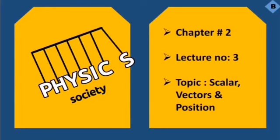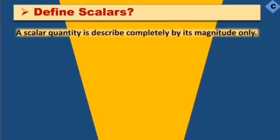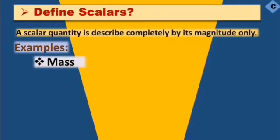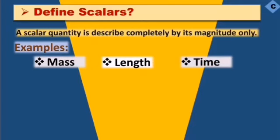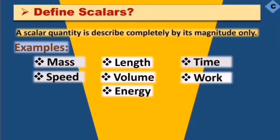So we will move forward to our topics. Define scalars. What is scalar? If you have a magnitude, it is a scalar quantity. We will define this simply. Examples include mass, length, time, temperature, speed, volume, work and energy.